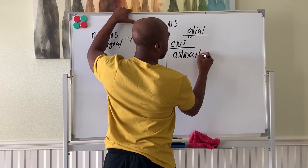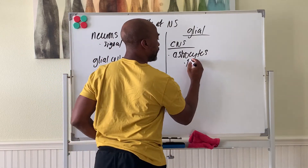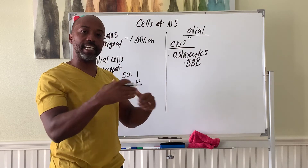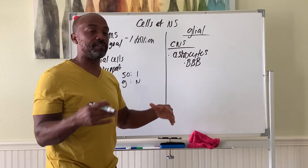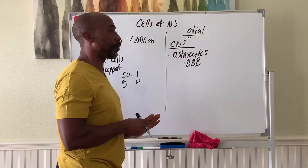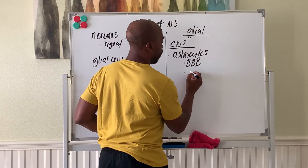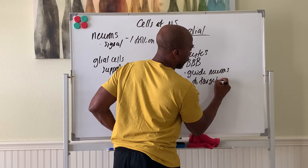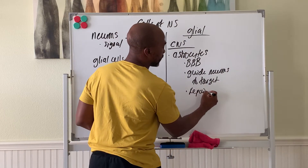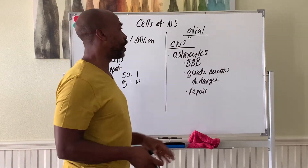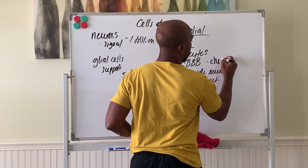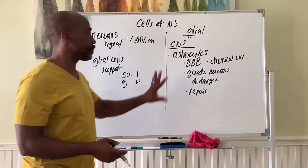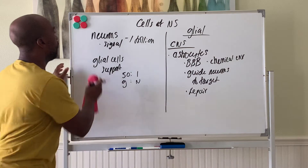The first CNS glial cells are astrocytes — the most numerous ones. Astrocytes are involved in the blood-brain barrier; they help limit movement of materials from blood into the brain and vice versa. They also guide young neurons to their targets, are part of the brain's repair system — filling in space when neurons die — and can control the chemical environment by soaking up extra material that may be harmful.